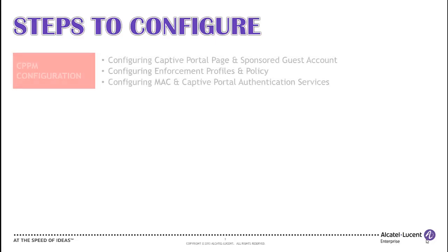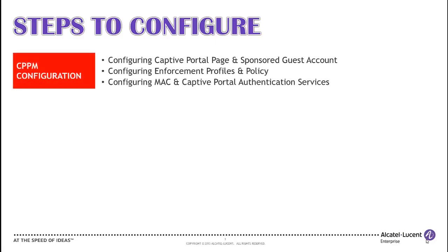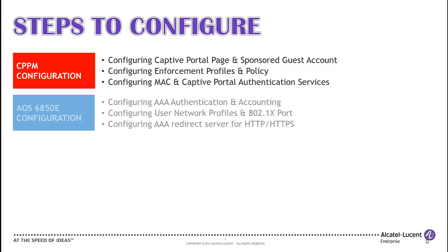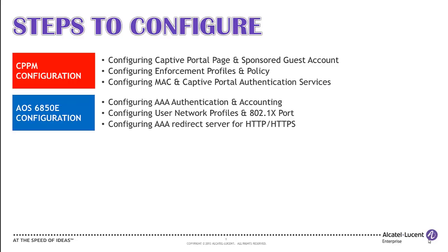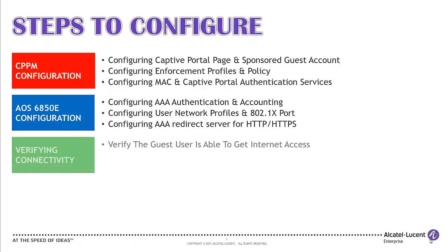Steps to configure CPPM and AOS 6850E for guest network access: Configuring Captive Portal page and sponsored guest account; configuring enforcement profiles and policies; configuring MAC and Captive Portal Authentication Services; configuring AAA Authentication and Accounting; configuring User Network Profiles and 802.1x; configuring AAA Redirect Server for HTTP and HTTPS. Finally, verify the user is able to authenticate and get appropriate network access.